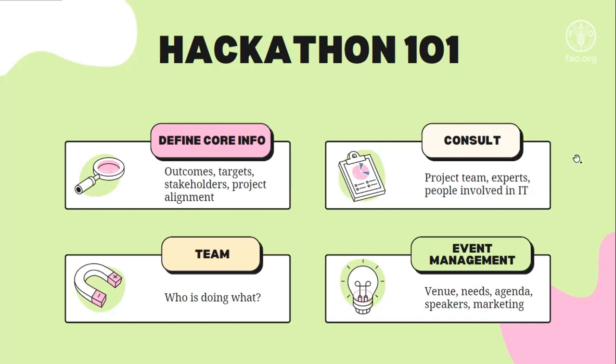The second step is to consult. This is when we approach relevant people — for example, our project team — we understand their needs, and we assess the needs of potential participants. Since our project was a joint project between two countries, we had the opportunity to consult with the FAO team in Kyrgyzstan. They had some experience with an agriculture hackathon in Bishkek the previous year, so it was great to learn from their experience and helped us define the scope for our hackathon.